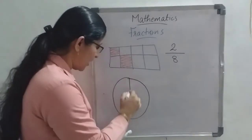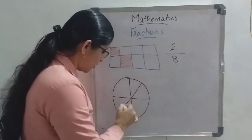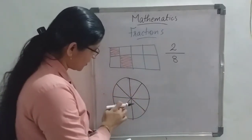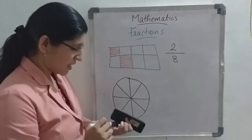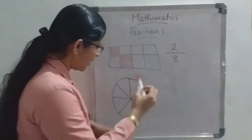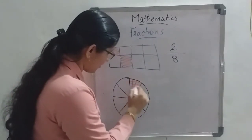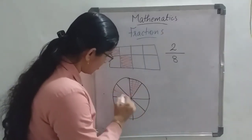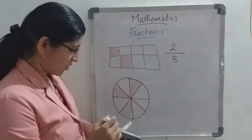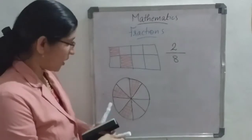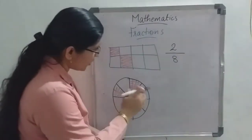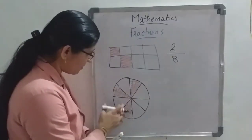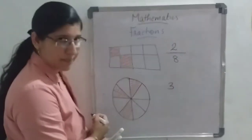One more example: suppose this is a birthday cake, equally divided into 8 pieces. I took 3 pieces of this cake — I am very fond of cake! Then how can we write the fraction of the shaded part? Here, 3 parts are shaded.